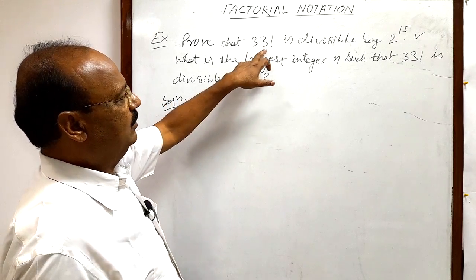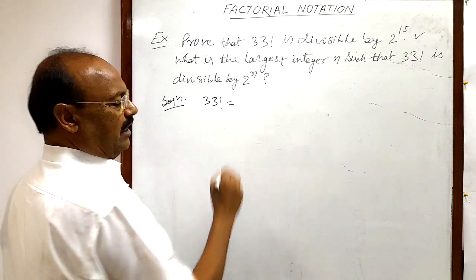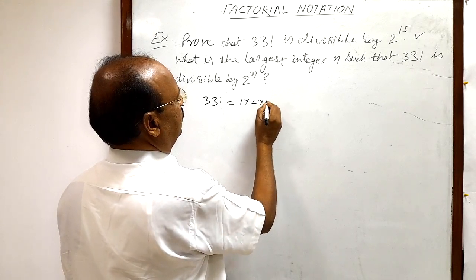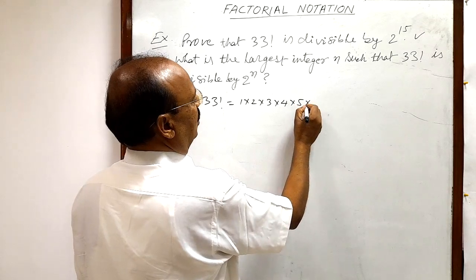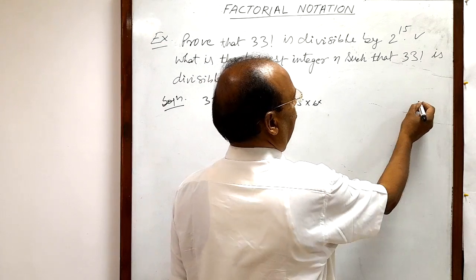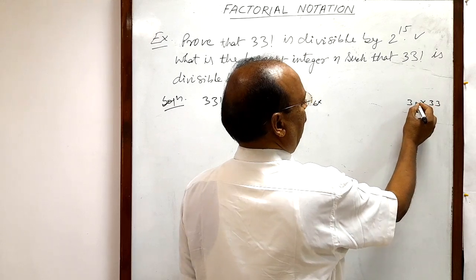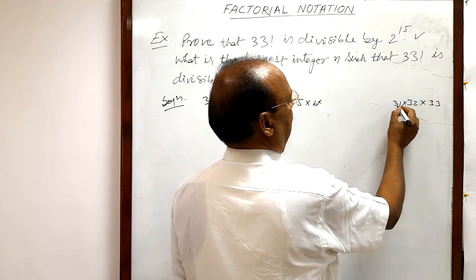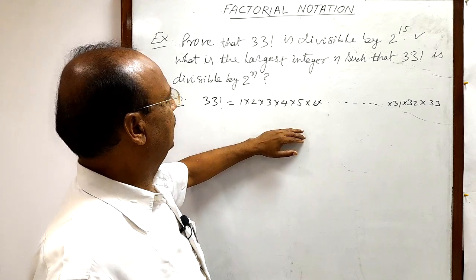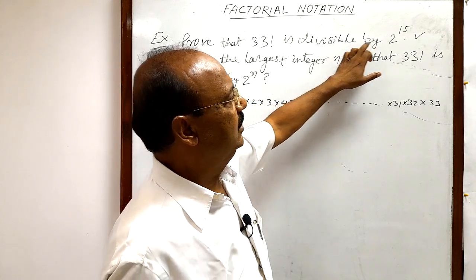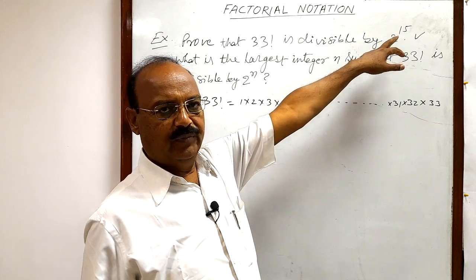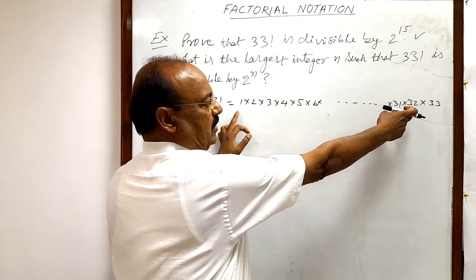The given factorial number is 33 factorial, and as we know 33 factorial can be expanded as 1 into 2 into 3 into 4 into 5 into 6, up to 33. This is 33 factorial. Here we have to prove that 33 factorial is divisible by 2 to the power 15. It means we need to show that 2 to the power 15 is a factor of this number.